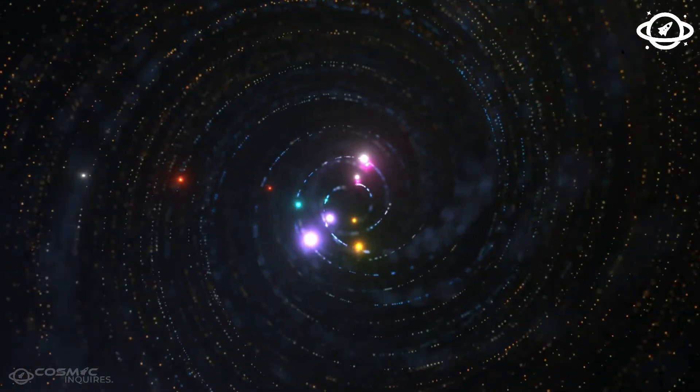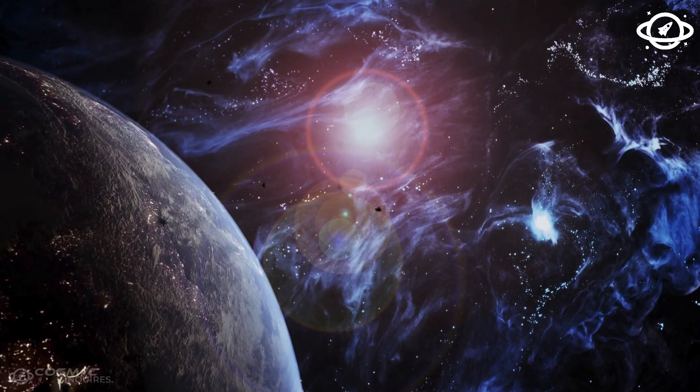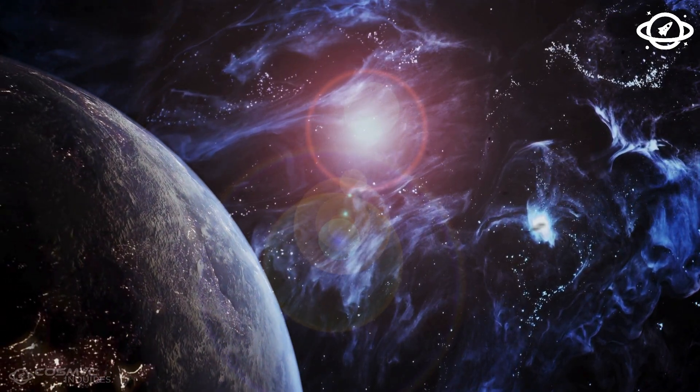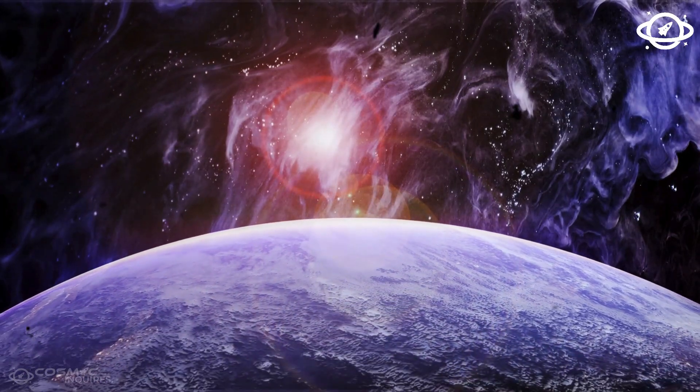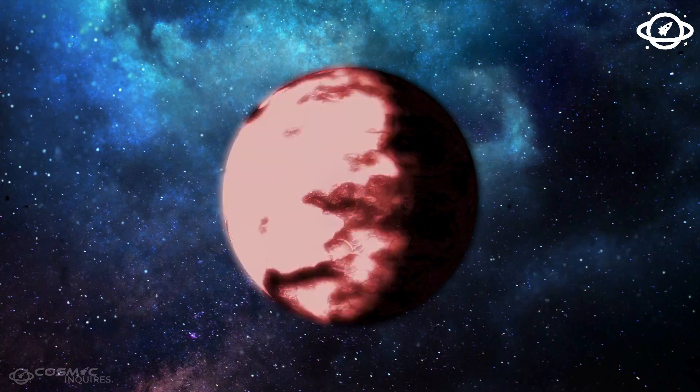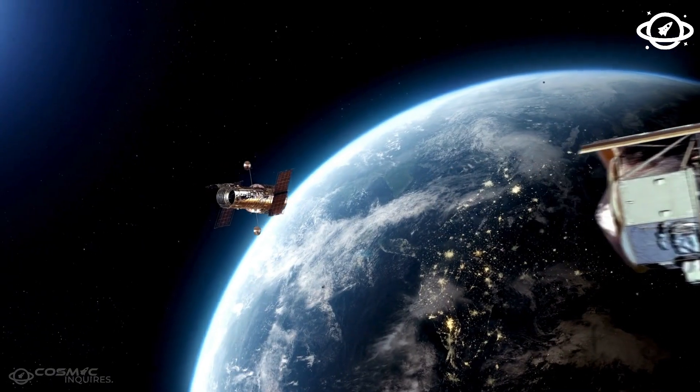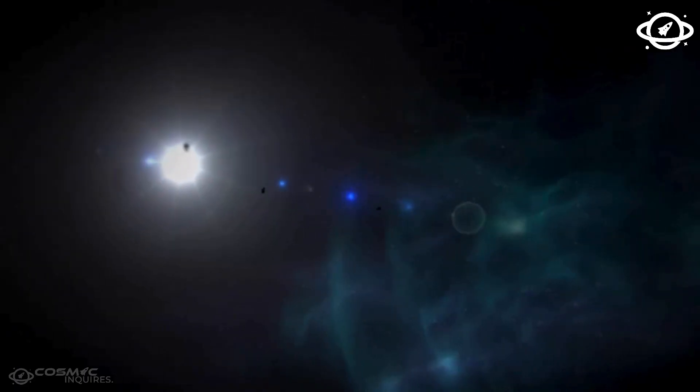This is the cosmic web, a gigantic structure resembling a neural network connecting galaxies across hundreds of millions of light-years. But here's the twist. This level of organization, symmetry, and alignment shouldn't exist according to standard simulations. Something, or someone, may be weaving the universe with hidden rules we have yet to understand.